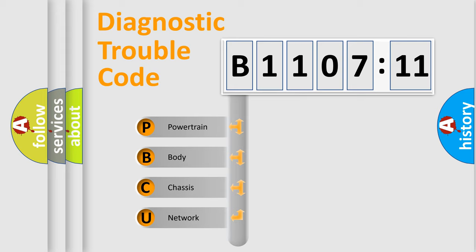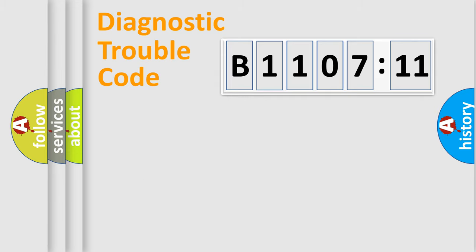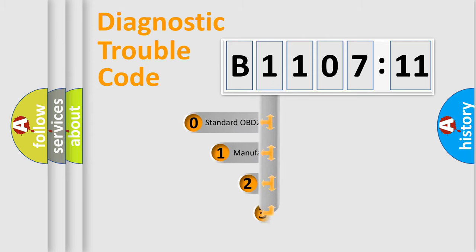We divide the electric system of an automobile into four basic units: Powertrain, body, chassis, and network. This distribution is defined in the first character code.